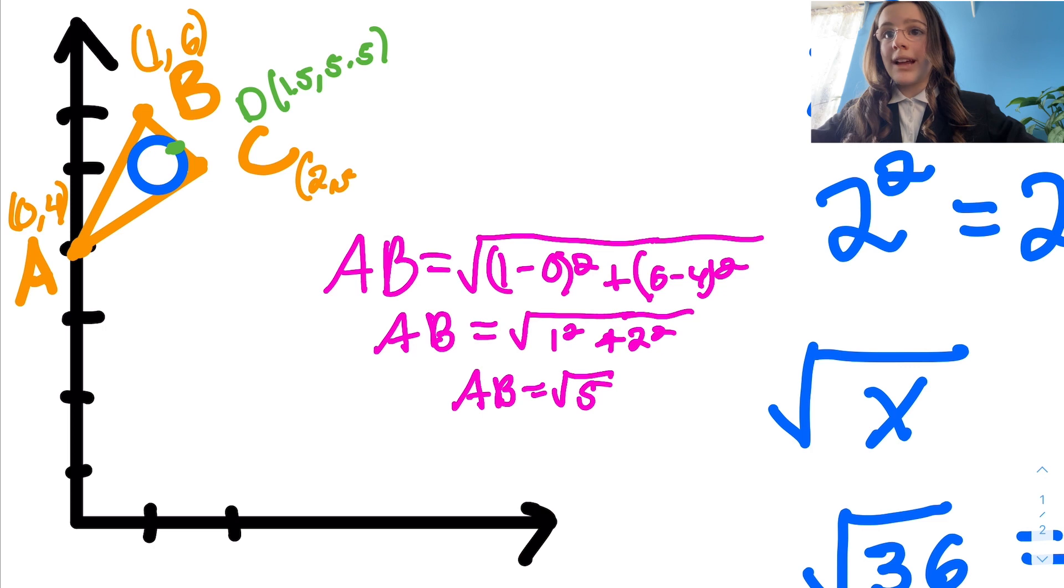We will now do this with lines AB, BC, and AD. Since this is an isosceles triangle, the lines AC and AB will be the same.